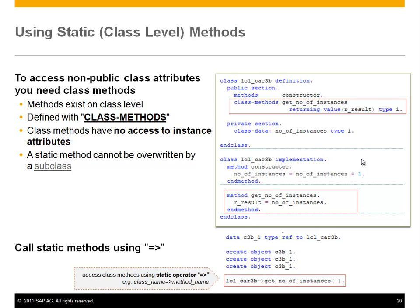Now let's talk about class methods — methods that exist at class level. A method defined with CLASS-METHODS has no instance at all; it is not hooked up to any instance and has no access to instance attributes. For example, GET_NUMBER_OF_INSTANCES — instead of making the class data public, you define a method to return the value. You call it using class name, double arrow, then the class method name.